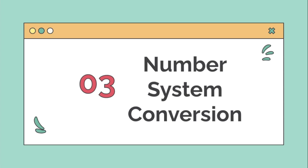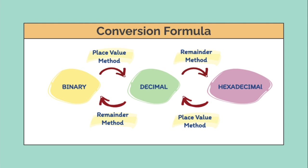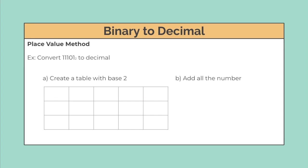Now let's look at the last content: number system conversion. To convert binary to decimal, use the place value method. To convert decimal to hexadecimal, use the remainder method. Hexadecimal to decimal uses the place value method, and decimal to binary uses the remainder method. Let's look at how each of these works.